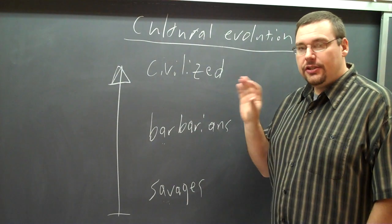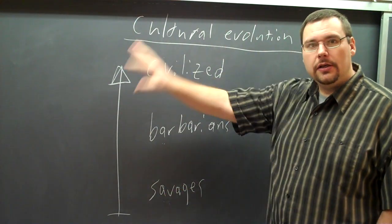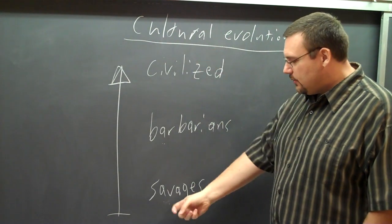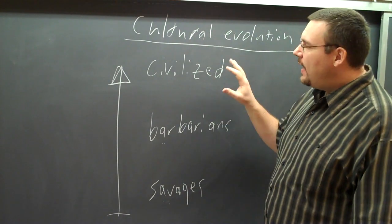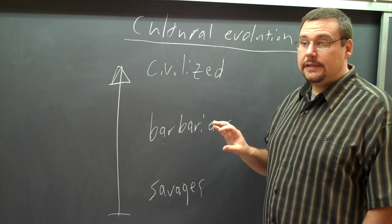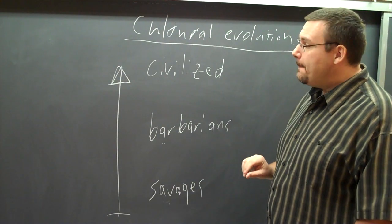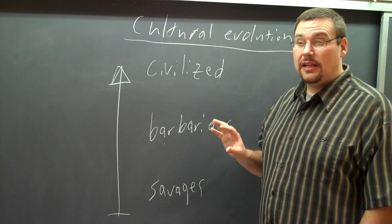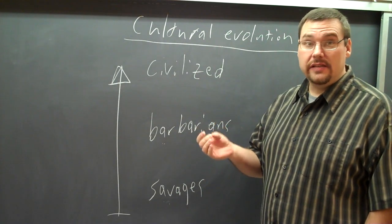Now, it doesn't take too much stretching of your brain to start to see the racism in here. Because guess who's in this group? European-derived folks. Guess who's in groups down here and here? People from elsewhere. This model was used to justify a lot of colonial processes, and still is, in a lot of ways. You can see this model being used as an assumption in a lot of discussions about things like race, class, even gender.